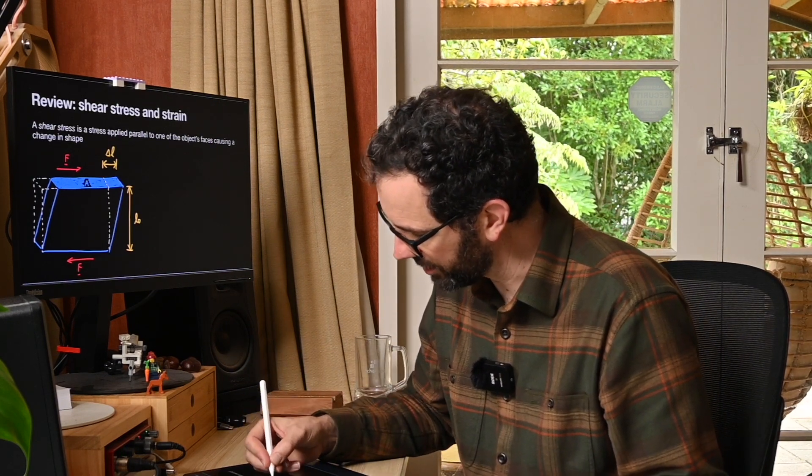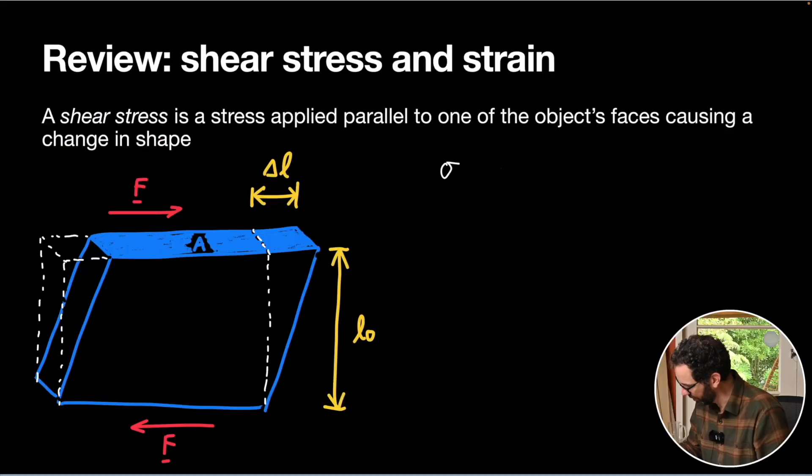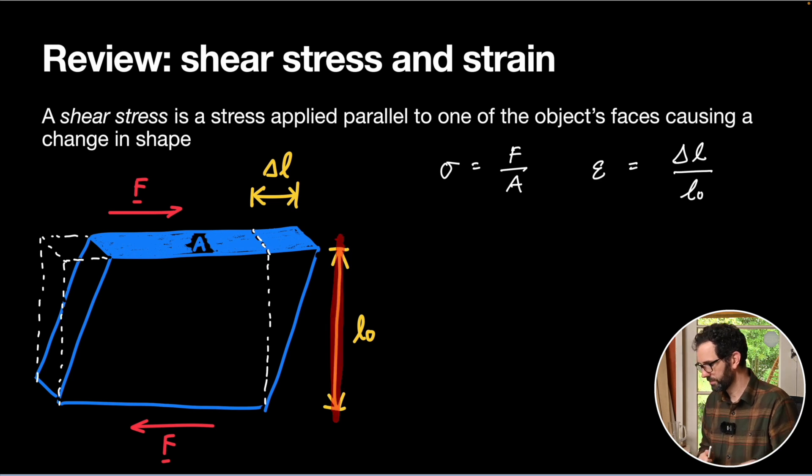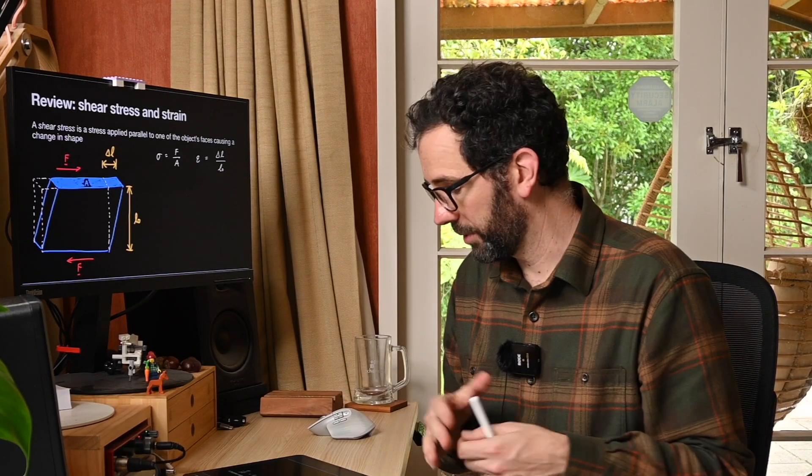We defined our shear stress to be that force divided by the area. Now the area is the area on the top of our solid. And we defined the shear strain to be a slightly weird one. It's the change in length divided by the starting length, but the change in length is this way, whereas the starting length is up and downwards.